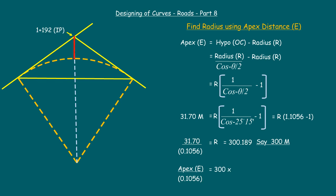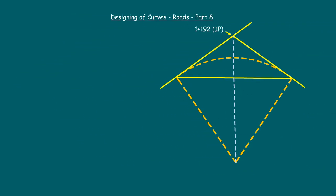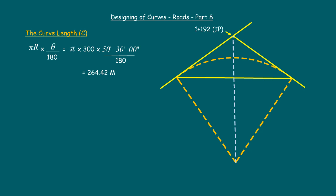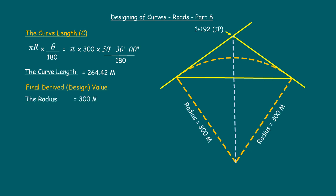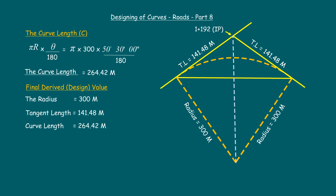The final apex distance equals 300 into 0.1056, which gives 31.68 meters. For setting out we need the curve length, so with radius finalized as 300 meters, the curve length equals pi into R into theta divided by 180, that is pi into 300 into 50 degrees 30 minutes divided by 180, giving 264.42 meters. The final design values are: radius = 300 meters, tangent length = 141.48 meters, curve length = 264.42 meters, apex distance = 31.68 meters.